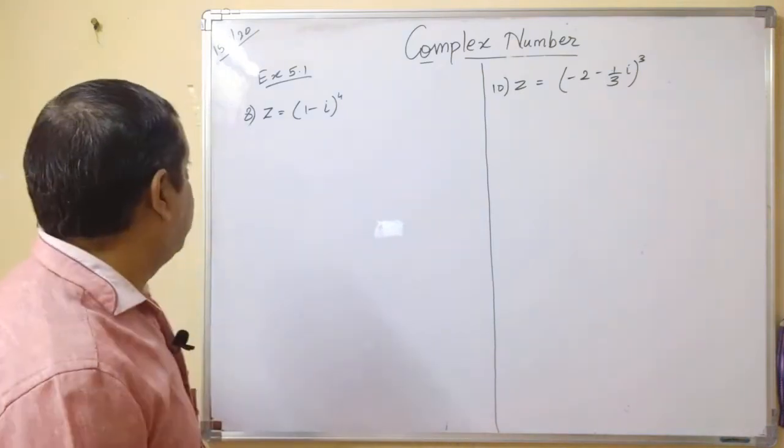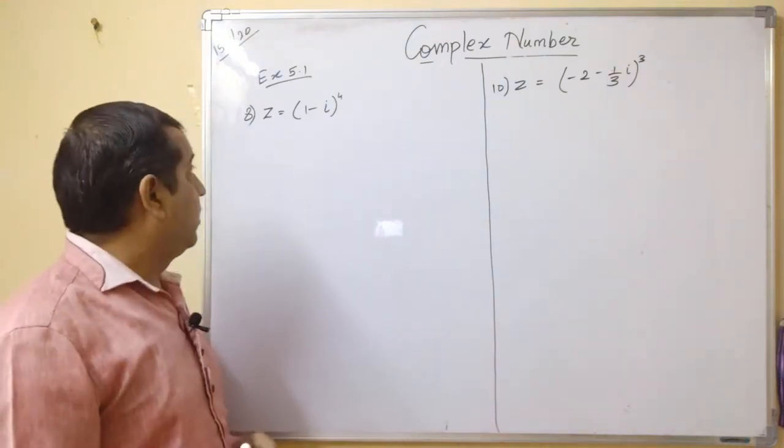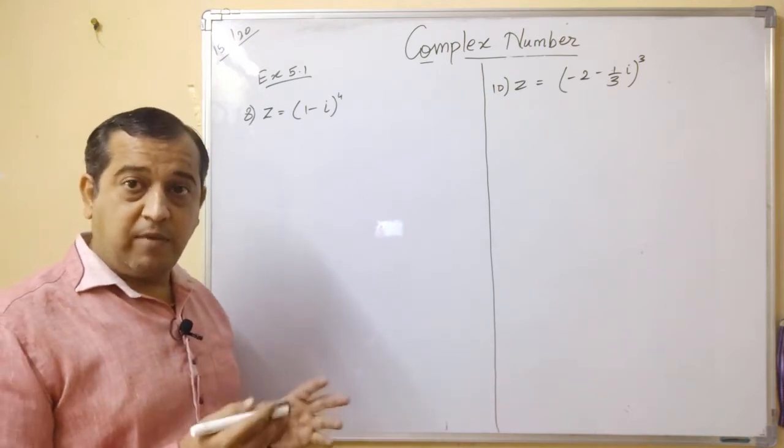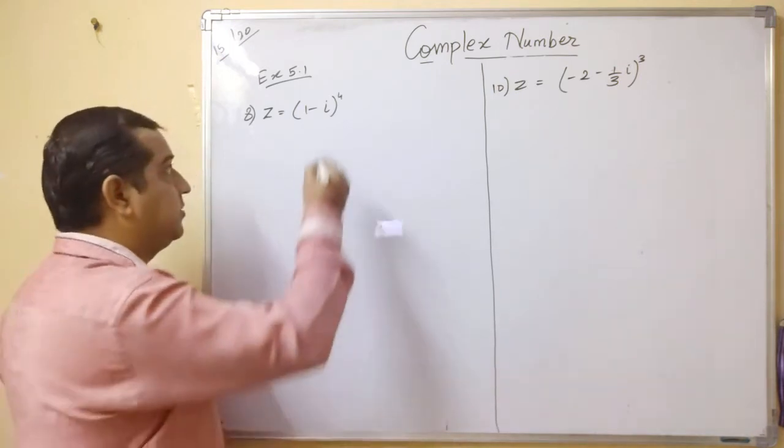Okay, proceeding further, we come to exercise 5.1, 8th question. Here, your complex number is 1-i raised to 4, and we have to convert this to a plus ib form. Very easy.